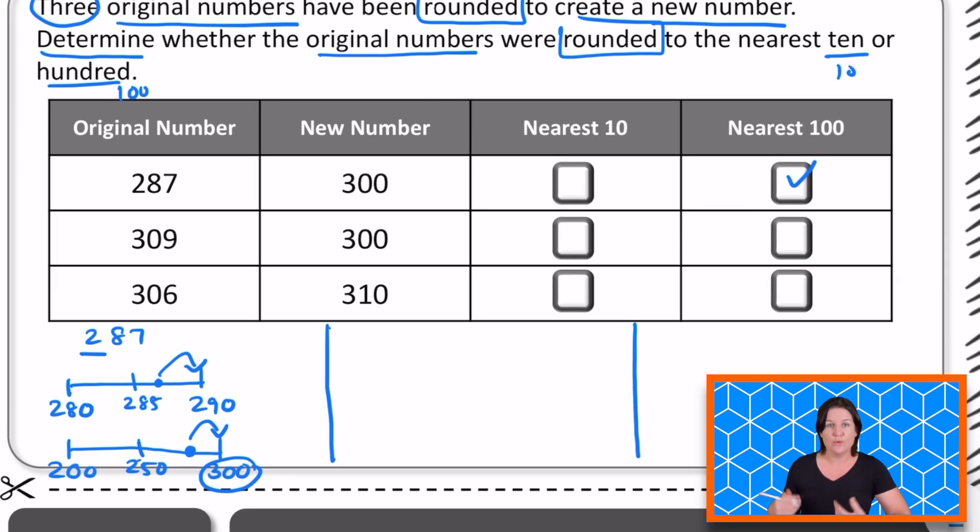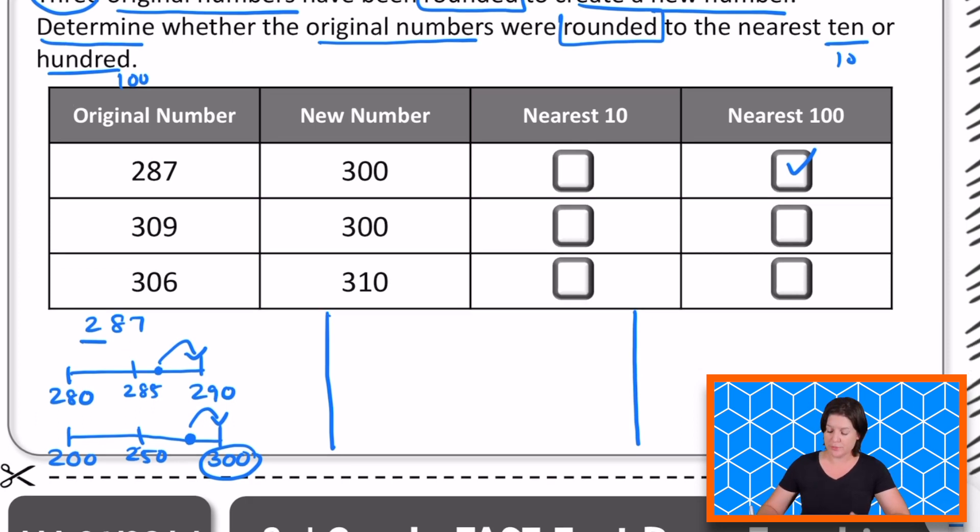Okay, now we have the next number is 309. And we have the new number of 300. So first, let's round to the nearest 10. There are 30 tens. So between 30 tens or 300 and 31 tens, which would be 310. Halfway point is 305. And we know that 309 is past 305. So we would round up to 310.